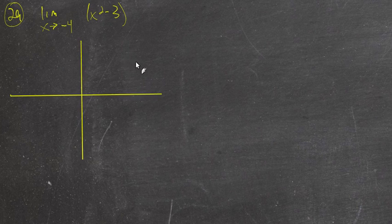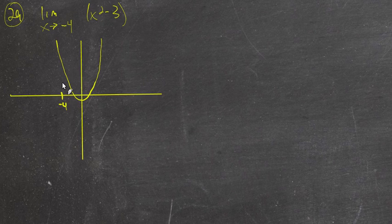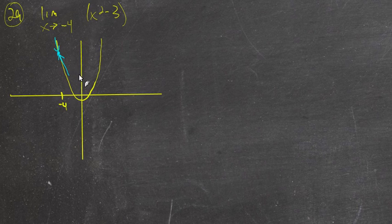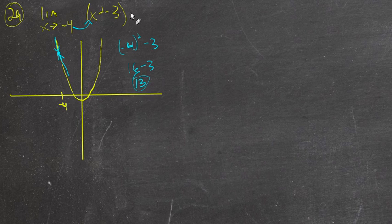For problem 29, I'm just going to sketch this: the limit as x approaches negative 4 of x squared minus 3. As x approaches negative 4, does the limit exist? On the left and right of negative 4 it certainly seems like it does — we're approaching the same value. This is one of those well-behaved functions with no hole here. So we just take negative 4, put it in: negative 4 squared minus 3 is 16 minus 3, which is 13. So the limit is 13.